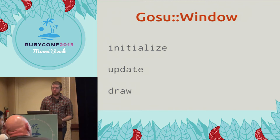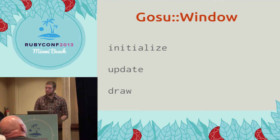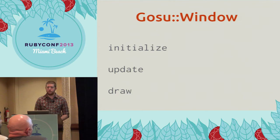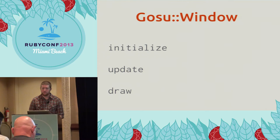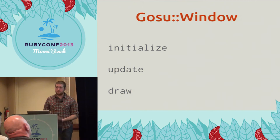At the core of Gosu is the Gosu window class. You're expected to subclass it and implement 3 methods on it: initialize, update, and draw. You'll notice that these are the 3 methods from the game loop — setup is called initialize, and render is called draw. Gosu handles all of the hard work of getting the window to show up and managing the timing of the game loop, and you're just responsible for implementing your actual game logic in these 3 methods.